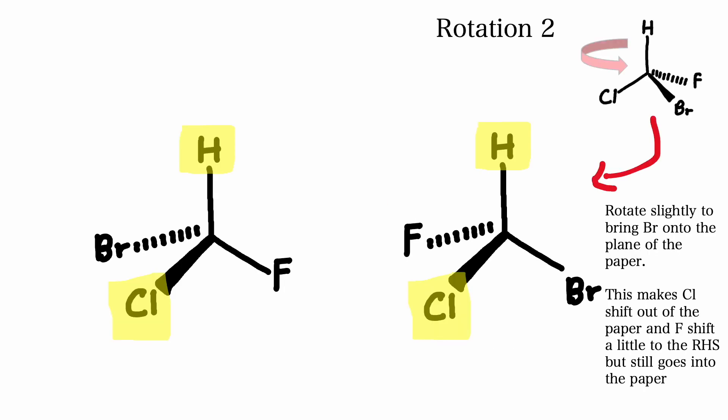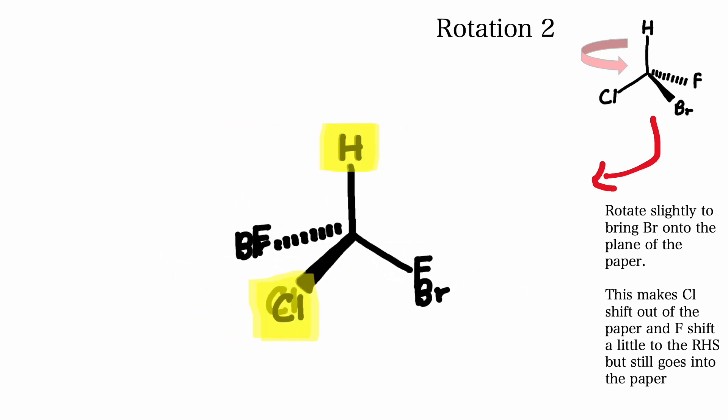If we rotate it again slightly anti-clockwise to try and get it to superimpose on the original molecule that we took the mirror image of, we see that bromine is now on the plane of the page, chlorine is coming out of the page, and fluorine has shifted a little to the right hand side but still goes into the page. Regardless, you see now that bromine and fluorine are not superimposable on each other.